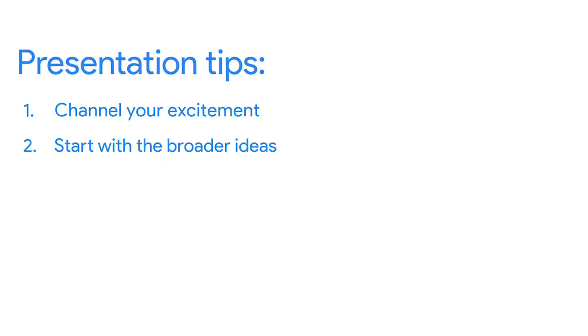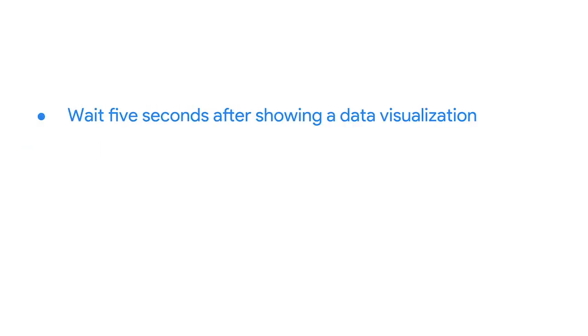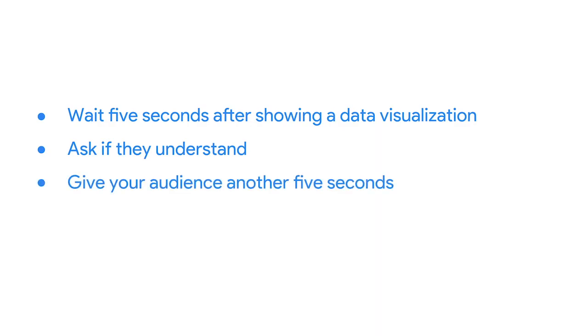We also learned about the five-second rule. As a quick refresher, whenever you introduce a data visualization, you should use the five-second rule and ask two questions. First, wait five seconds after showing a data visualization to let your audience process it. Then ask if they understand it. If not, take time to explain it. Then give your audience another five seconds to let that sink in before telling them the conclusion you want them to understand. Try not to rush through data visualizations — this will be the first time some of the people in your audience are encountering your data and it's worth making time in your presentations for them.